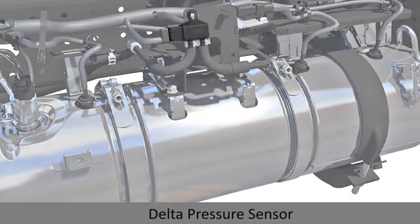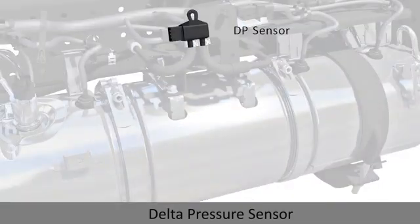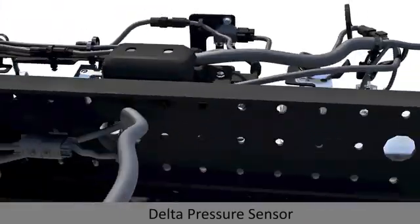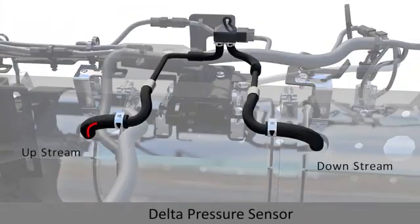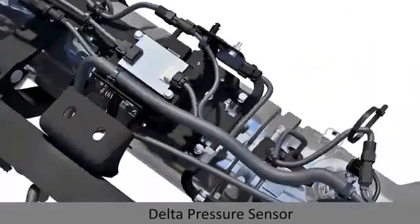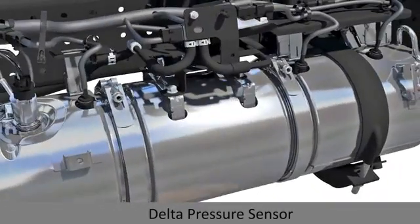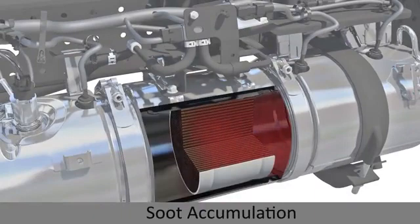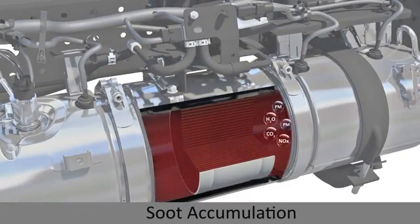The differential pressure sensor is located at the DPF. The pressure tubes are connected at the upstream and downstream of the DPF to measure the differential pressure delta P across the DPF. As soot accumulates inside the DPF, the free flow of exhaust gas gets interrupted and the delta P increases.